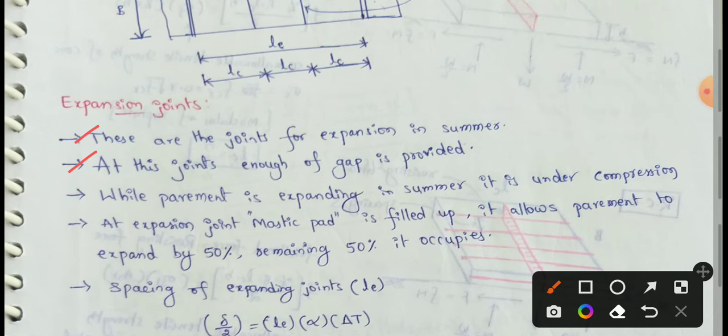At the expansion joints, a sufficient gap is provided. As per IRC, the gap is 2.5 cm. While the pavement is expanding in summer, it is under compression, so the expansion joint is compressed.